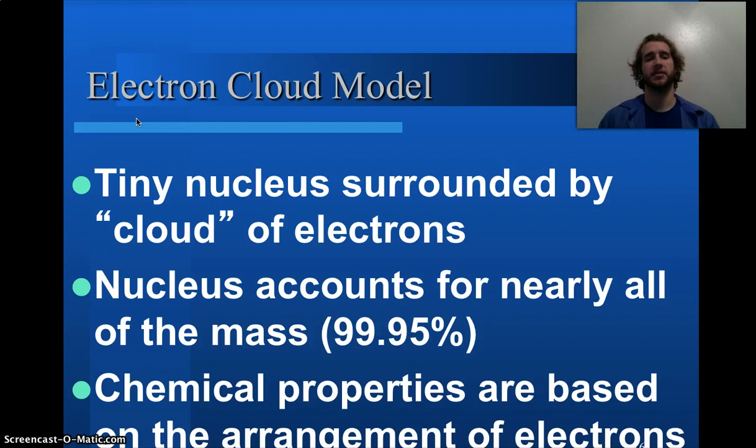Electron cloud model being that there's this tiny nucleus surrounded by a cloud of electrons, this place where we most likely or with 99.95% certainty can find this area or the location of our electrons. Now, the nucleus is still just about all of the mass, 99.995%, excuse me, that's, I mean, that's percent of the nucleus mass. Most all of the mass of our atom is from the nucleus, just a teeny tiny bit from the electrons. But, so, for the most part, everything's the same. Still have our nucleus.